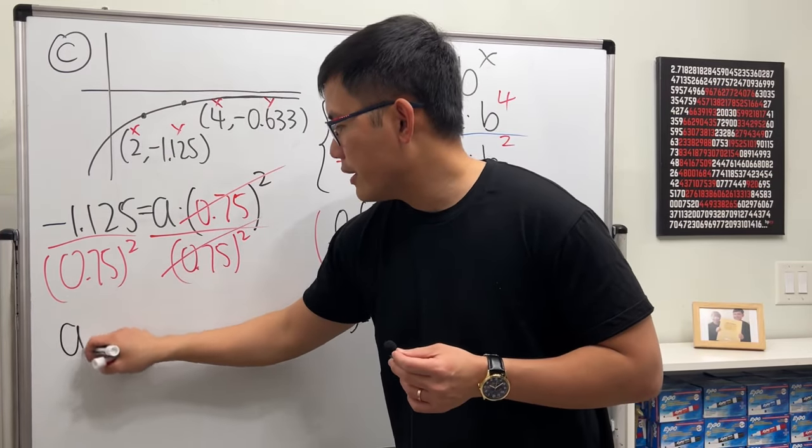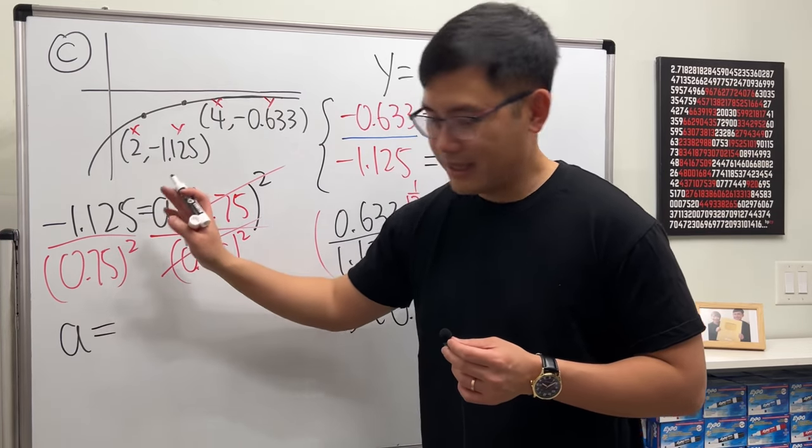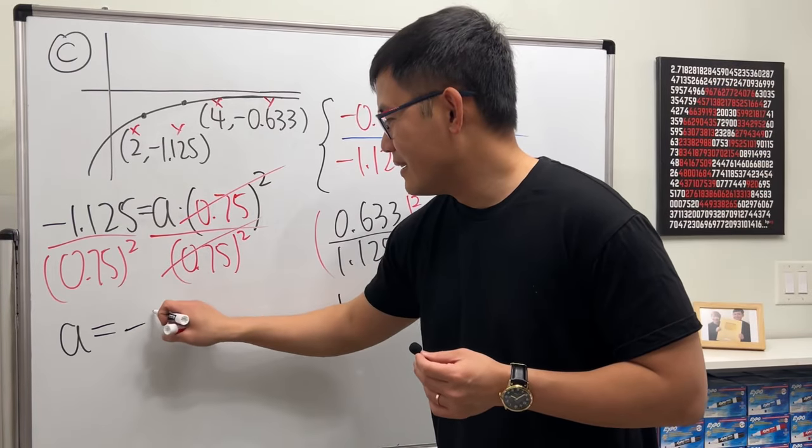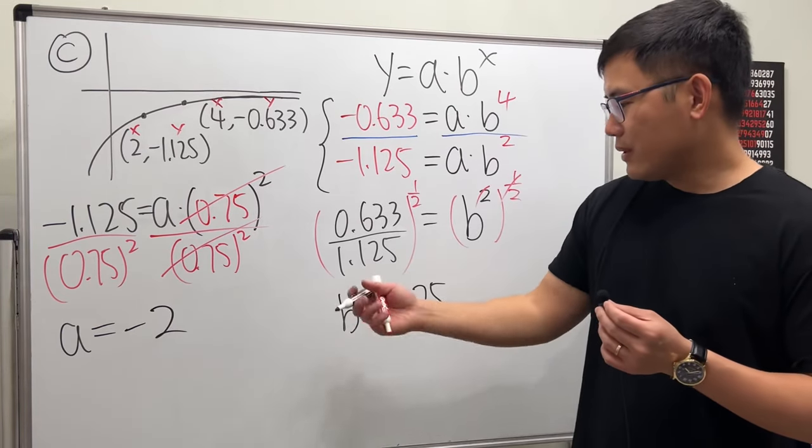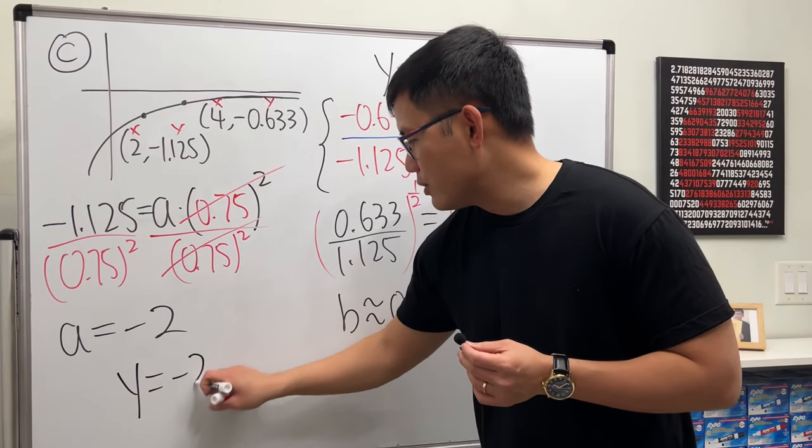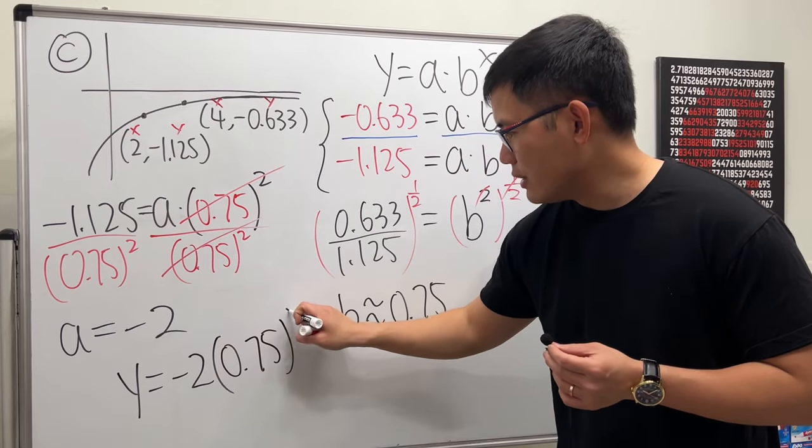So, we get, I'll just write down 0.75 squared, whatever this number is. I will do that on the calculator later. So, a will be, you do this, and I will tell you the answer is negative 2. So, finally, a is that, b is this, so we know y equals negative 2 times 0.75 raised to the x power. That's going to work.